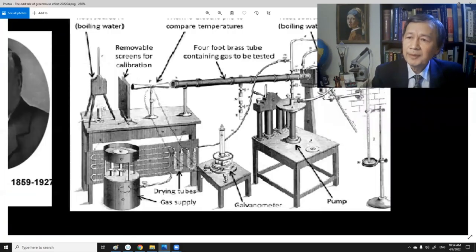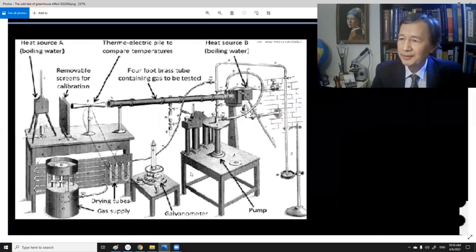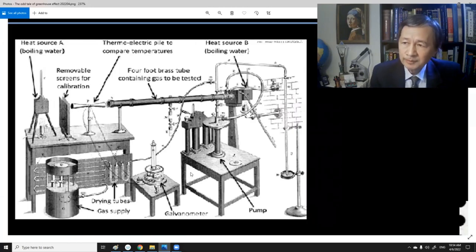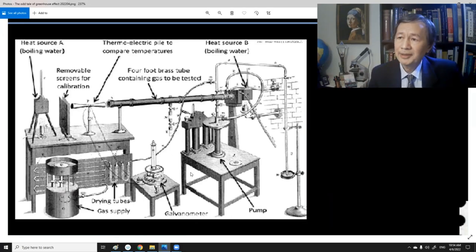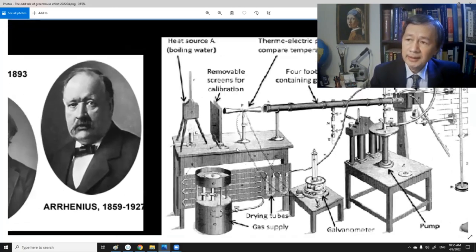So that is the early remark made by Fourier. By the 19th century, Tyndall was the first person who actually did some measurement to demonstrate that certain kind of gases can absorb a certain amount of infrared radiation. The infrared radiation is referred to the radiation re-emitted by the Earth. However, from his experimental setup, one can argue that his measurement is far from quantitative.